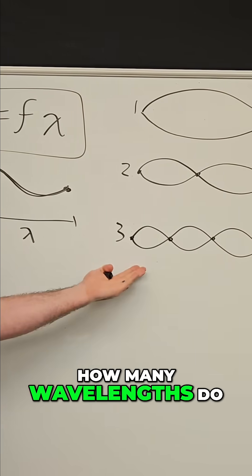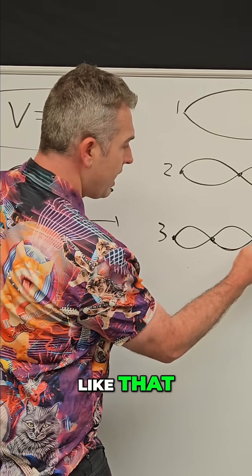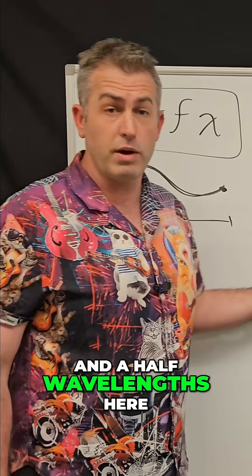And in the third shape, how many wavelengths do you see here? Well, a full wavelength looks like that. And there's still another half of a wavelength. So we have one and a half wavelengths here.